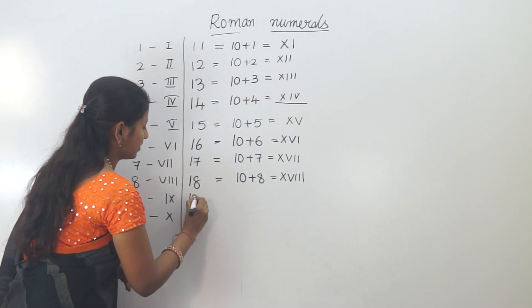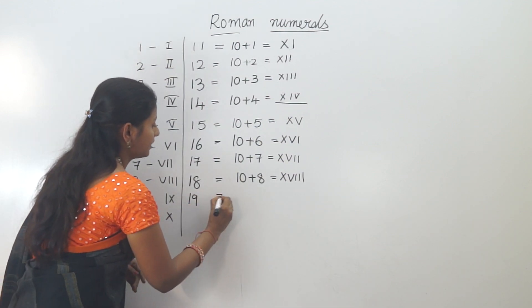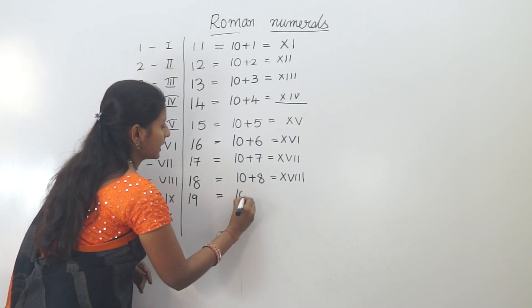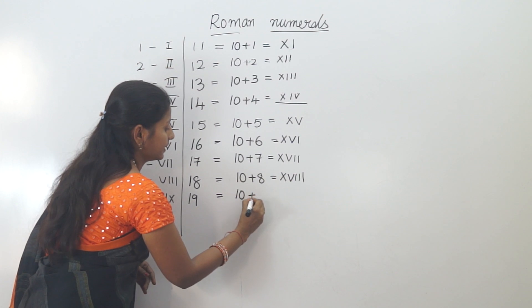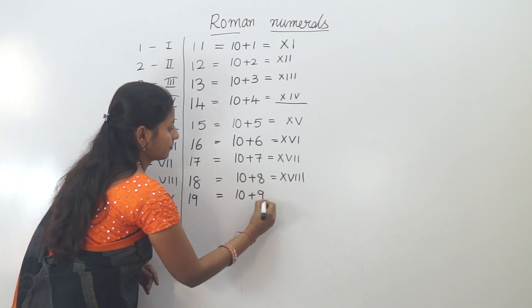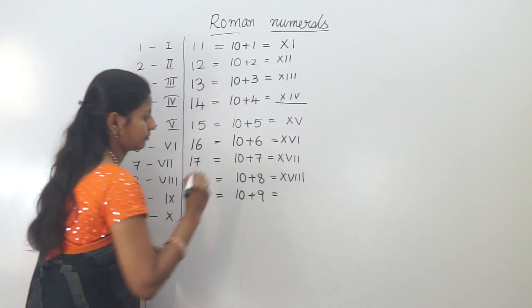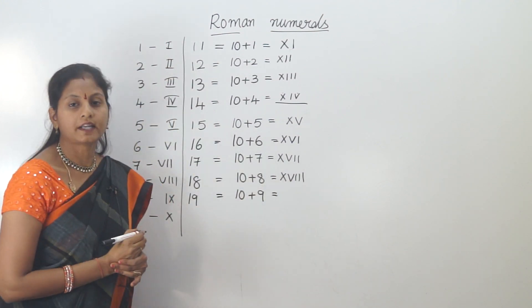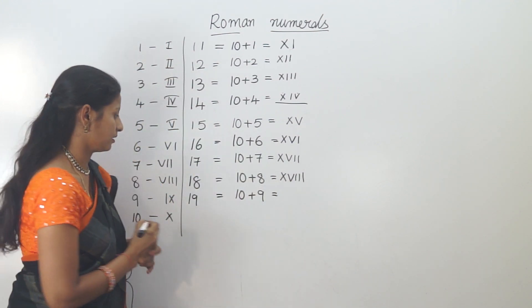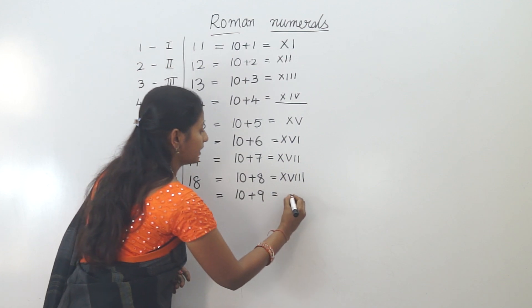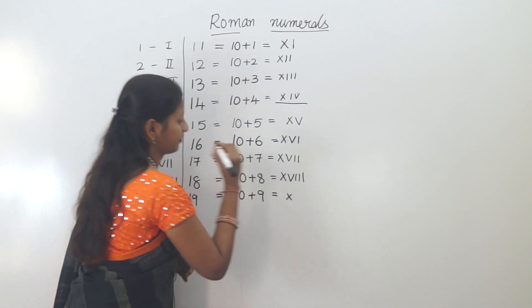Next, 19 and 20. Nineteen expanded is 10 plus 9. Ten is X.